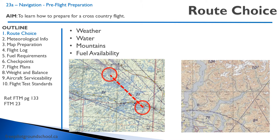Let's say you want to do a flight from Thunder Bay to Wawa. If you're in a multi-engine airplane, it's fine — you can go direct. But if you're flying a single-engine airplane, there's a big body of water in the middle there called Lake Superior. So you might want to go north first towards Nipigon and Marathon before then heading southeast.